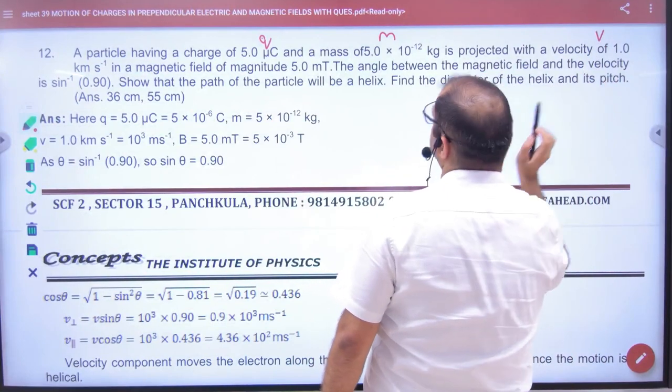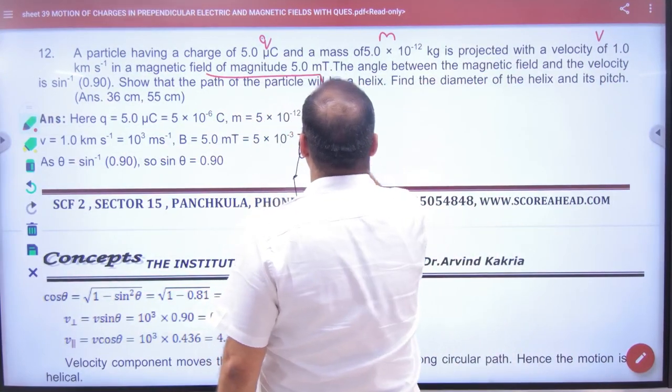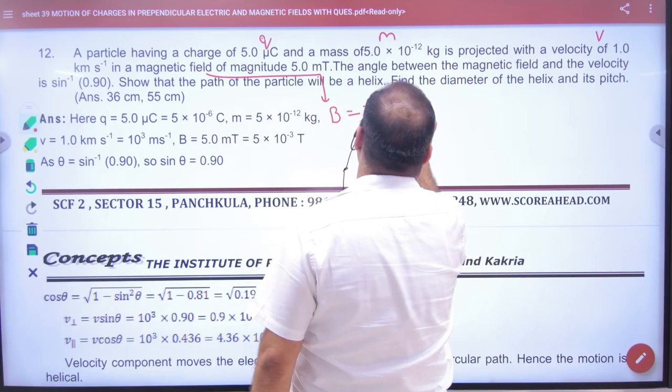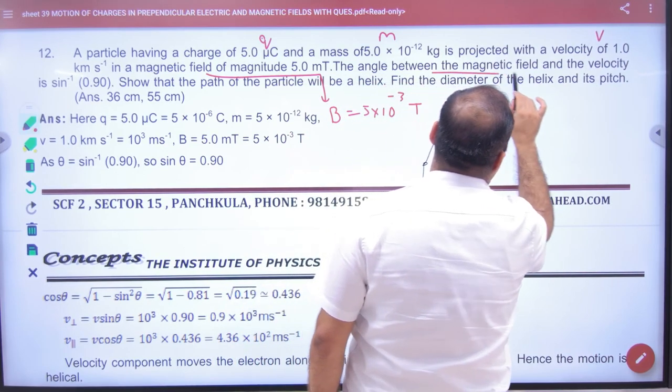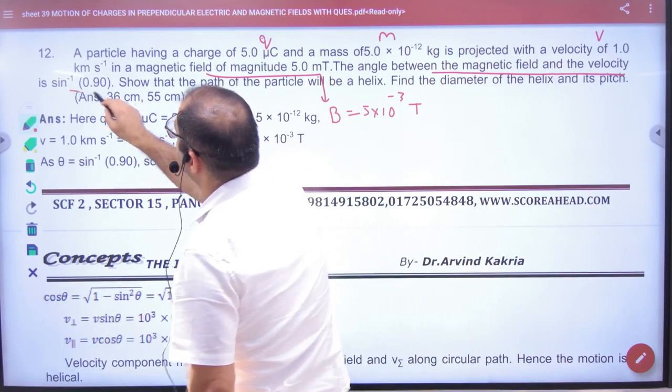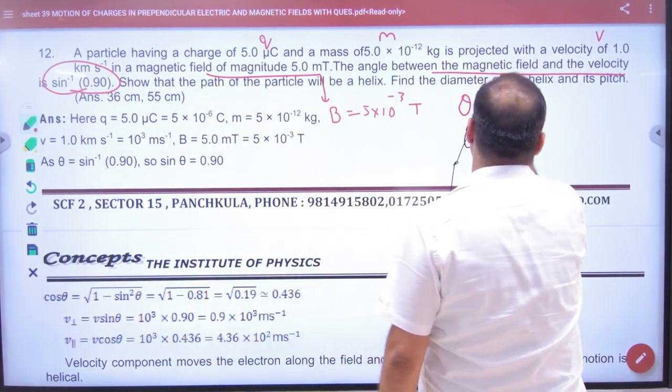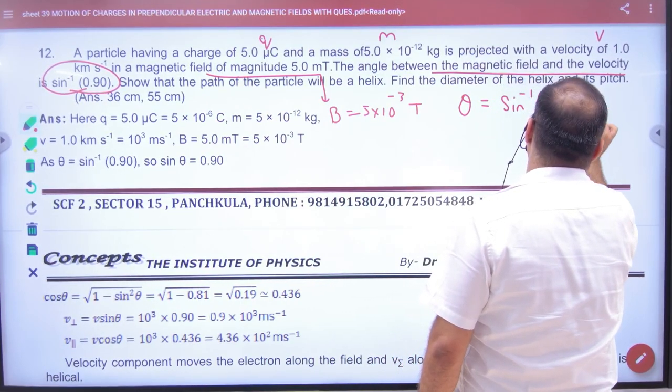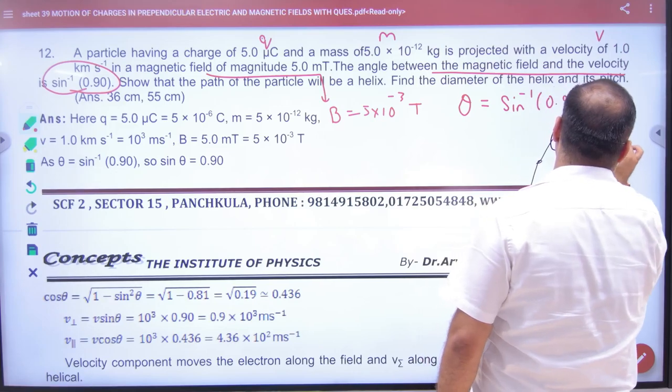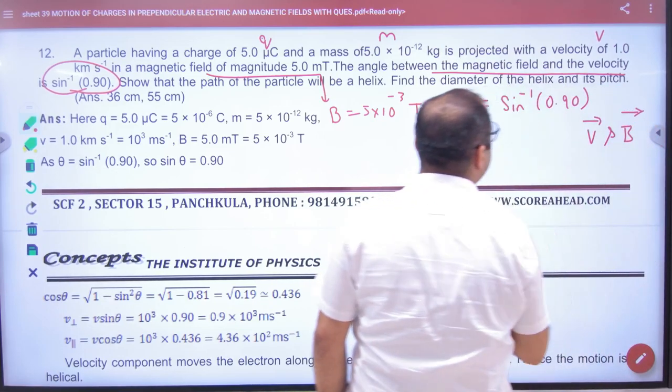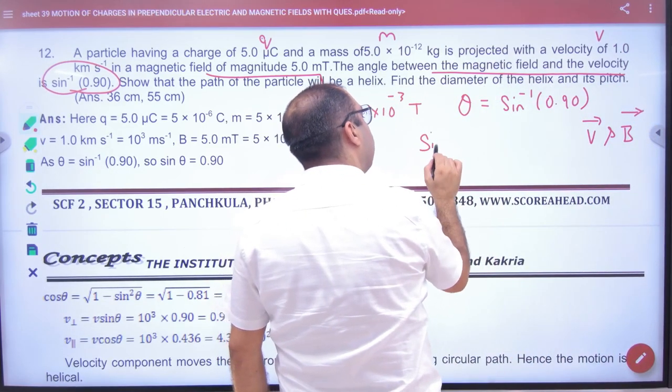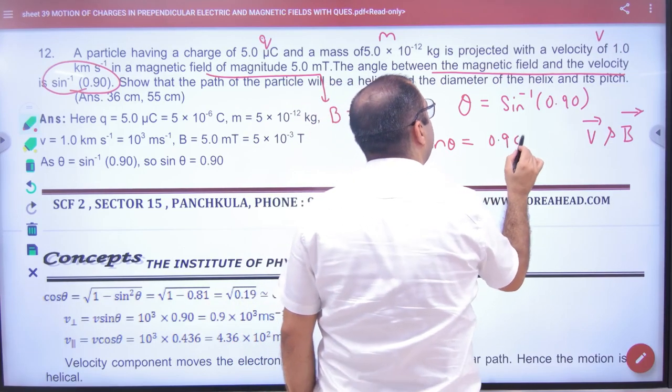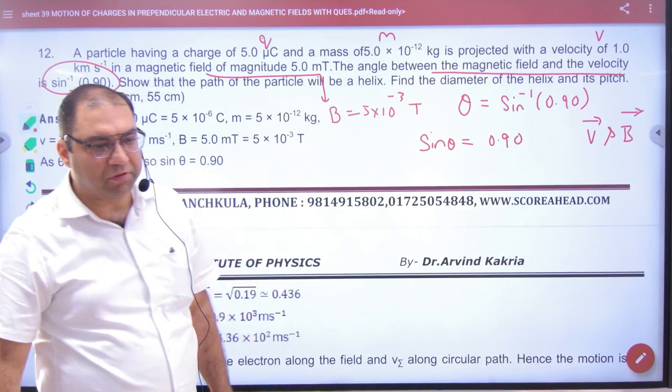with a velocity v in a magnetic field B = 5×10⁻³ tesla. The angle between the magnetic field and velocity is given: theta = sin⁻¹(0.90). We solve for sine theta and get the value.